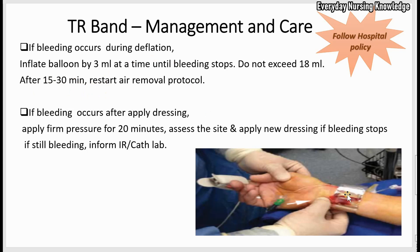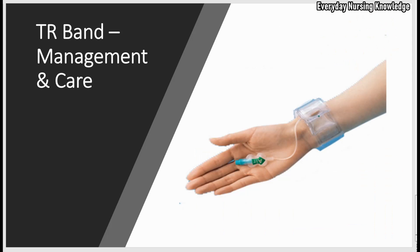If you have removed the TR-BAN and notice bleeding at the dressing site, remove the dressing and apply manual pressure on the puncture site for 20 minutes. Then look at the site — if there is no bleeding, apply a new dressing. If it is still bleeding, inform the IR or cath lab. Today we learned about TR-BAN, its management and care. Thanks for watching.